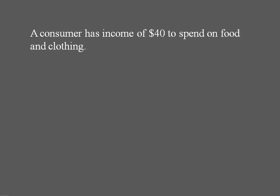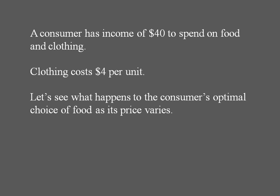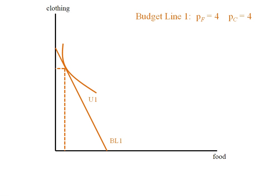A consumer has income of forty dollars to spend on food and clothing. Clothing costs four dollars per unit. We'll examine what happens to the consumer's optimal choice of food as its price varies. Here we have budget line one, where the price of food is four dollars and the price of clothing is four dollars.